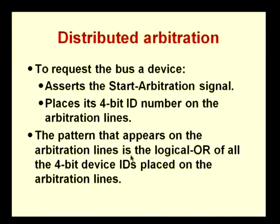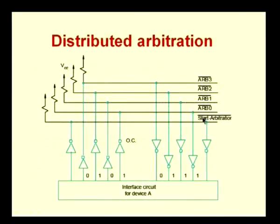If two different devices both want to request access to the bus, both will assert the start arbitration signal and place their 4-bit ID numbers on the arbitration lines, which are shared by all. For example, if one device puts out 0100 (which is 4) and another puts out 0001, the signal appearing on the arbitration lines will be the logical OR of both inputs — 0100 OR 0001 gives 0101.